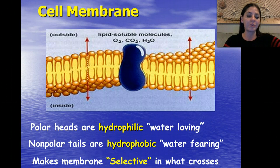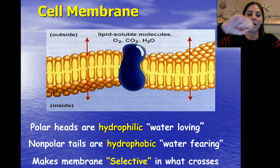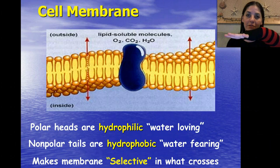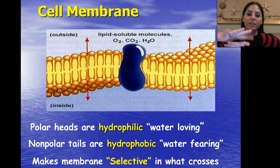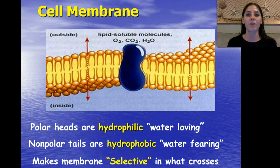This is what makes the membrane selectively permeable, meaning it lets some things in but keeps others out. For example, if you poured a cup of water with rocks on top of a shirt, the water would permeate through the fabric, but the rocks would stay on top because the shirt is not permeable to rocks.